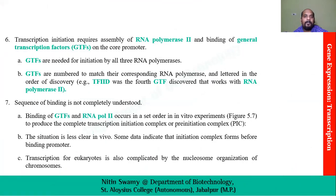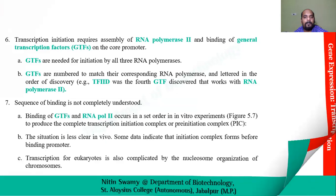RNA polymerase does not have a sigma factor to guide it to the correct position. So for that there are general transcription factors at the core promoter. There are varieties of transcription factors which come and sit on the correct position and guide RNA polymerase to bind to the correct position. Many transcription factors come one by one and add up to the process.